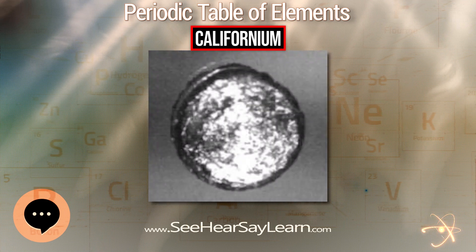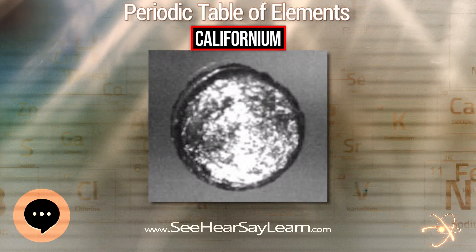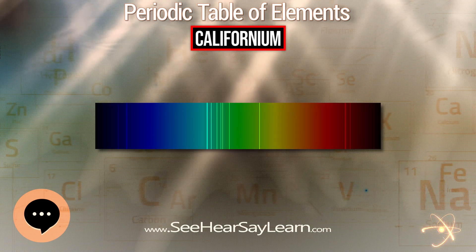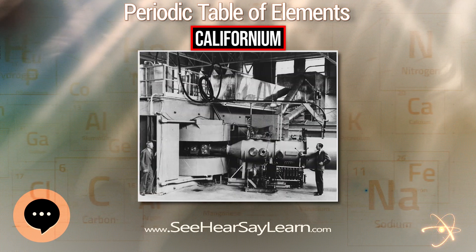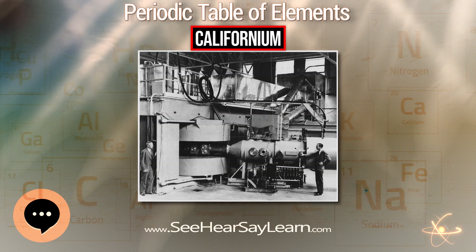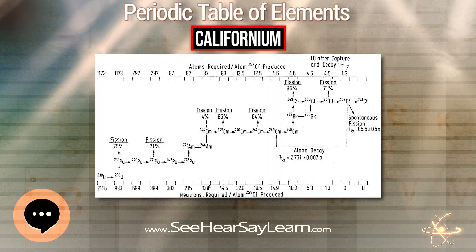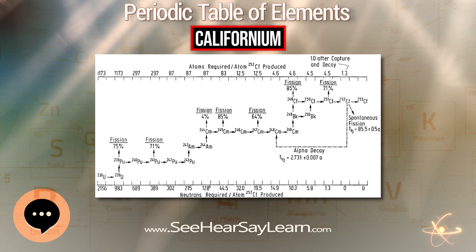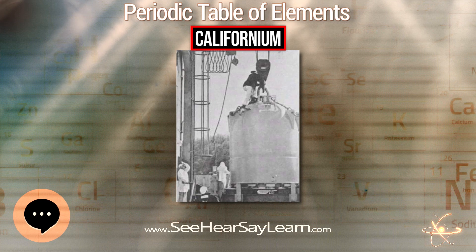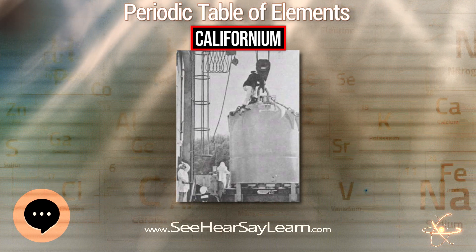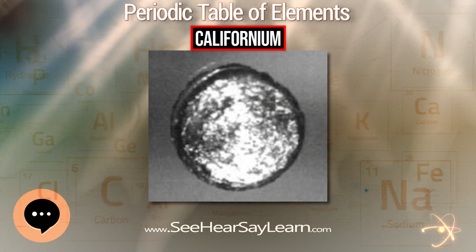The isotopes of californium range in mass number from 237 to 256. Californium-249 is formed from the beta decay of berkelium-249, and most other californium isotopes are made by subjecting berkelium to intense neutron radiation in a nuclear reactor. Although californium-251 has the longest half-life, its production yield is only 10 percent due to its tendency to collect neutrons and interact with other particles.